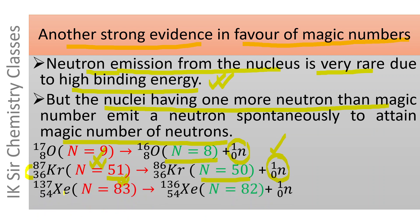Similarly, xenon-137 contains 137−54 = 83 neutrons; 83 is one more than the magic number 82. Therefore xenon-137 emits one neutron spontaneously, forming xenon-136, which contains 136−54 = 82 neutrons — the magic number of neutrons.